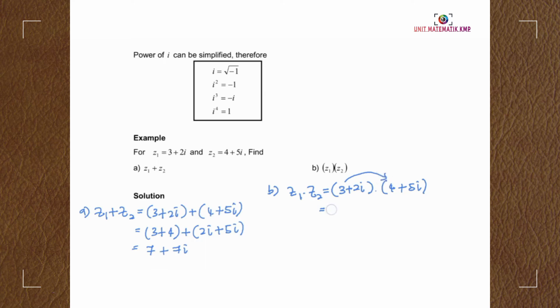3 times 4, we have 12. 3 times 5i, we got 15i. 2i times 4, we got 8i. 2i times 5i, we got 10i squared. As we know, i squared equals negative 1.